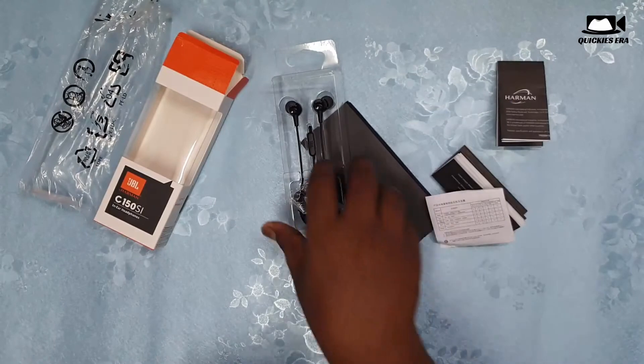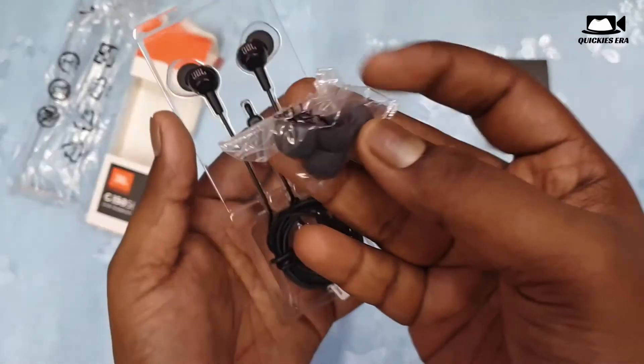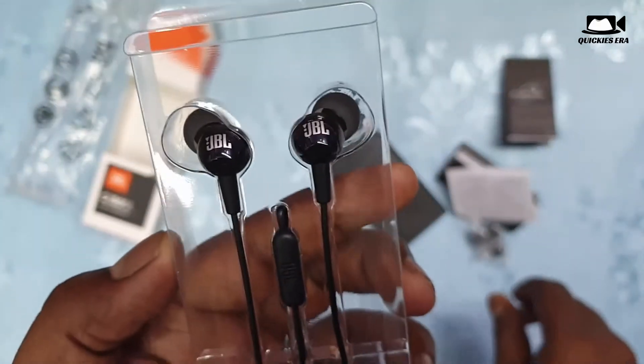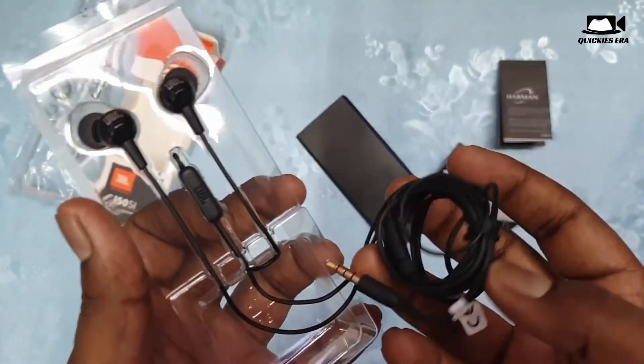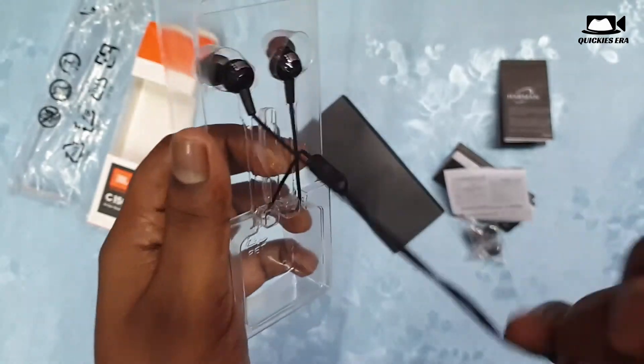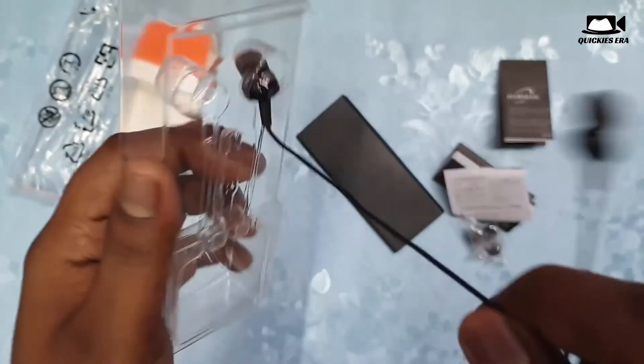This is a small pamphlet about the technical features. We also get two extra earbuds—one large and one small. The medium one is pre-installed on the earphones. This is the earphone. Let us take it outside the box.